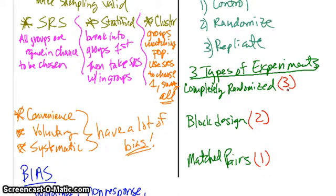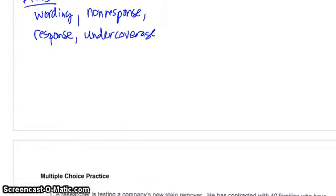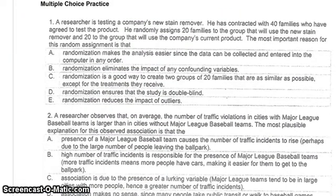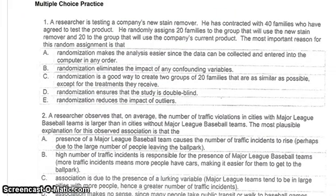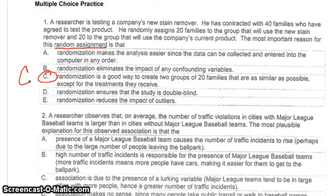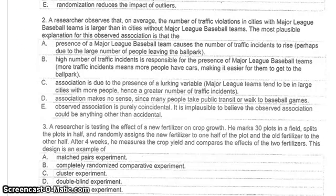Now we've got some multiple choice practice. Number one asks: what is the most important reason for random assignment? We want to be able to have groups that are easily compared. That's why C is the best answer. Remember, you can pause, read, and then look at my answer.